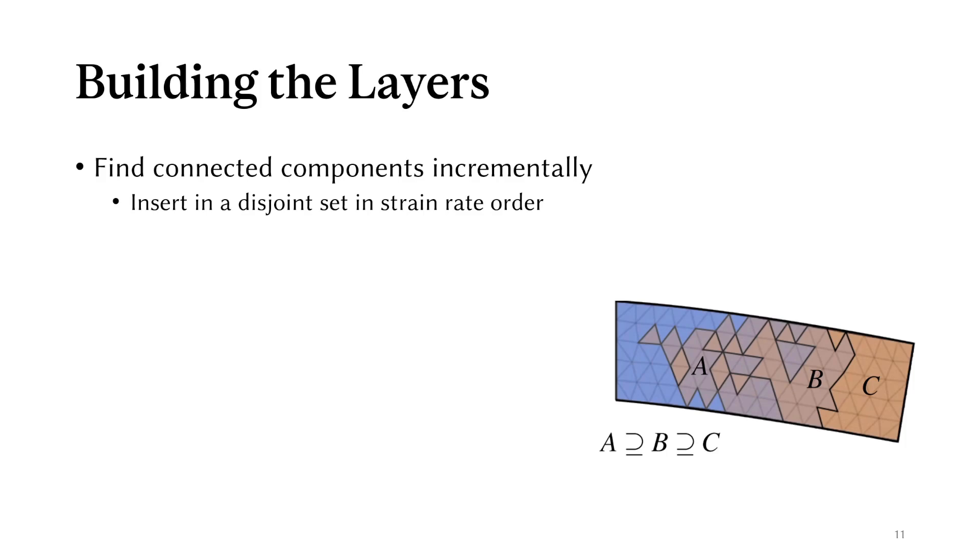Instead we use disjoint sets to keep adding new elements in increasing strain rate order, eventually rigidifying everything for the coarsest layer. This means that we need to sort the elements by strain rates every time step, but the cost of this operation is small compared to the constraint solve.